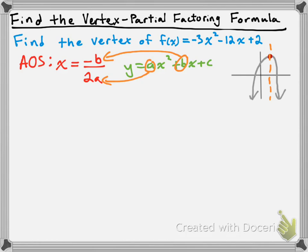Once we know the x-value of our vertex, it'll be easy to find the y-value, but we'll get to that in a moment. Let's calculate the x-value of our vertex — the axis of symmetry — for the example f(x) = -3x² - 12x + 2. So x is going to equal — instead of negative b, we replace b with negative 12. And our a value in this case is negative 3.